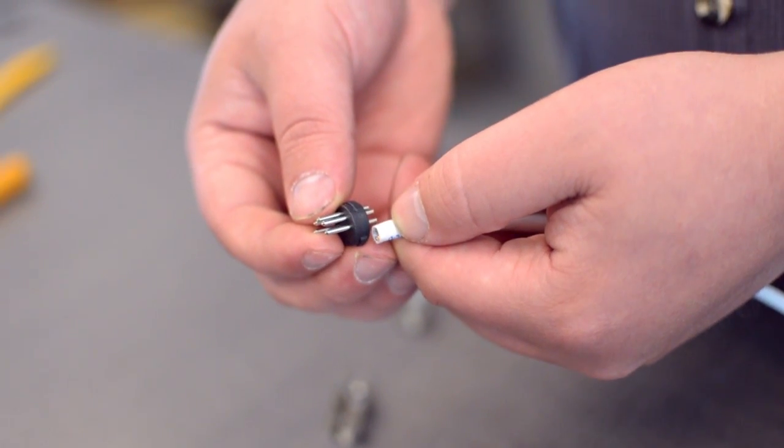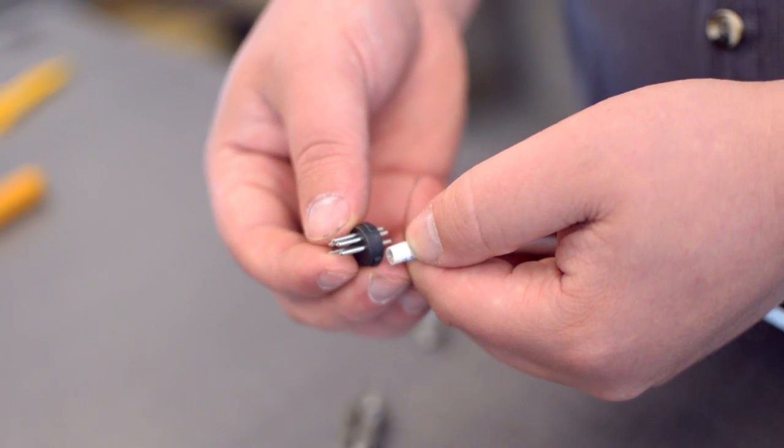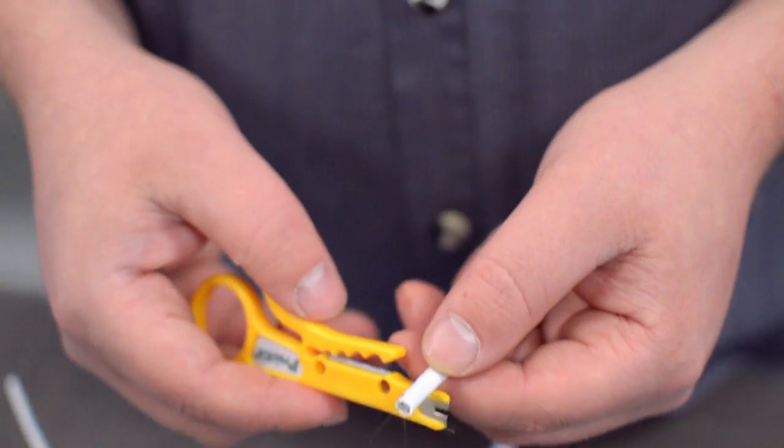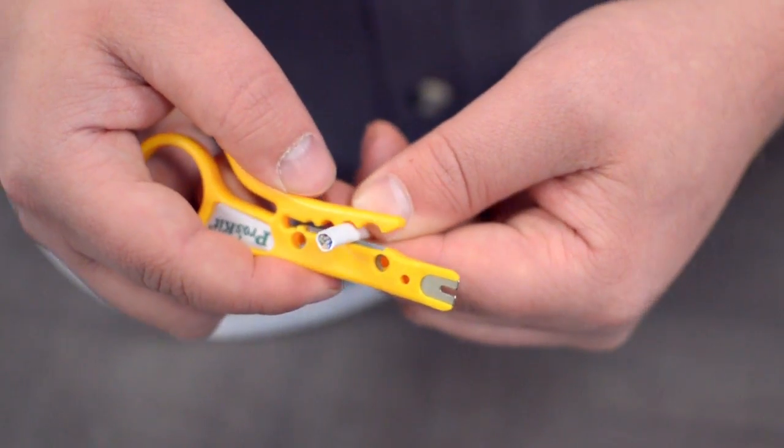Measure how far you will need to strip back the jacket by holding the cable up against the base of the connector. Then, strip the cable jacket using the wire strippers.